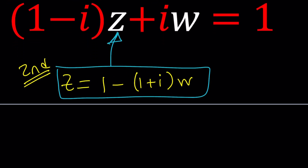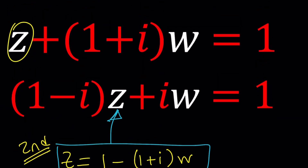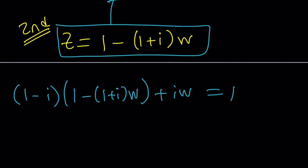We're going to replace Z with 1 minus 1 plus IW, then multiply by 1 minus I, and then add IW to it, and that's going to equal 1. Note that both equations are equal to 1, so you could also set them equal to each other, put the Zs on one side and Ws on the other side — that could be a fourth method — but that should probably work too.